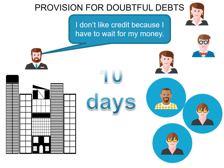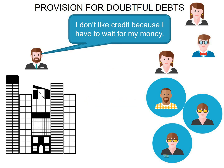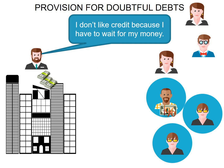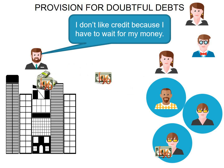Ten days goes by, 20 days goes by, 30 days goes by, and then after 30 days the credit customers start paying their account. These credit customers, if you can remember, are referred to as debtors. Sometimes the debtors may also have incurred interest due to late payment, and therefore they also need to pay for the interest.